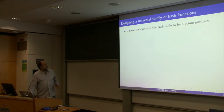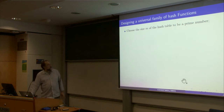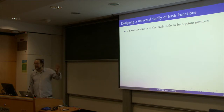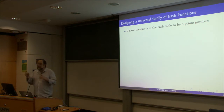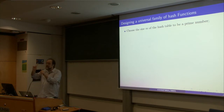Now, how do we design a universal family of hash functions? We choose the size m of the hash table to be a prime number. In the construction I'm going to show, it's important that m is prime, though there is a slight version that doesn't require this. Primeness is not a terrible limitation because, between any n and 2n, there is always at least one prime — that's Chebyshev's theorem from the mid-19th century. So between n and 2n there is always a prime, meaning you at most double your minimal desired table size.